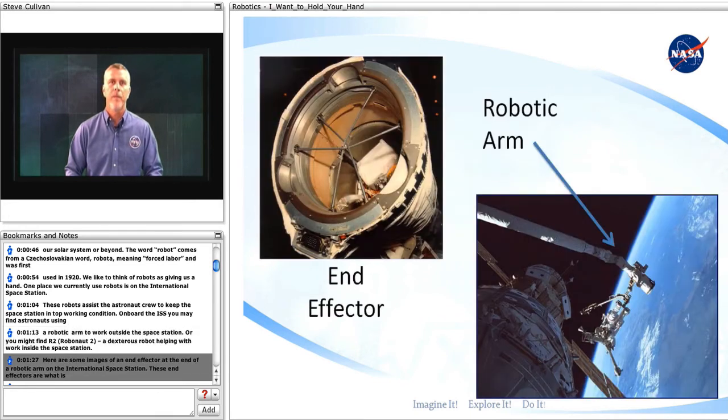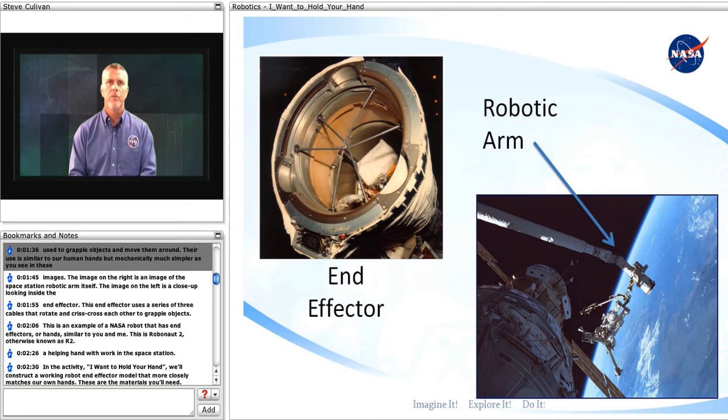Here are some images of an end effector at the end of a robotic arm on the International Space Station. These end effectors are what is used to grapple objects and move them around. Their use is similar to our human hands, but mechanically much simpler as you see in these images.